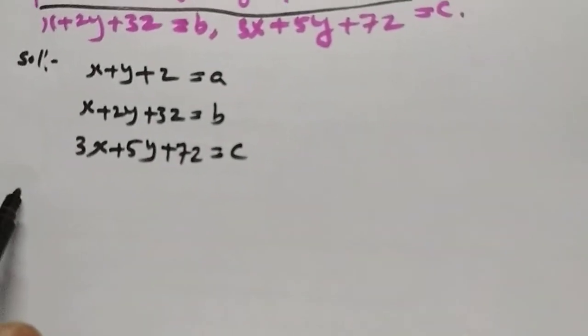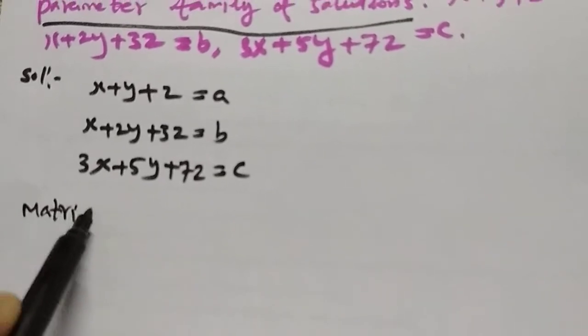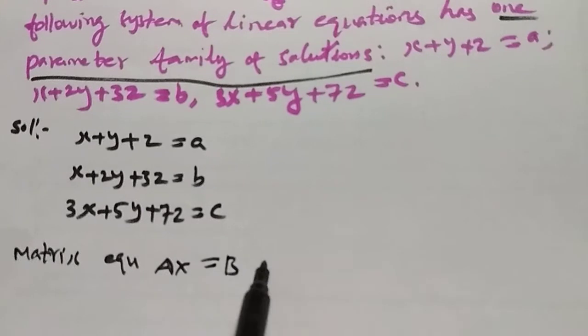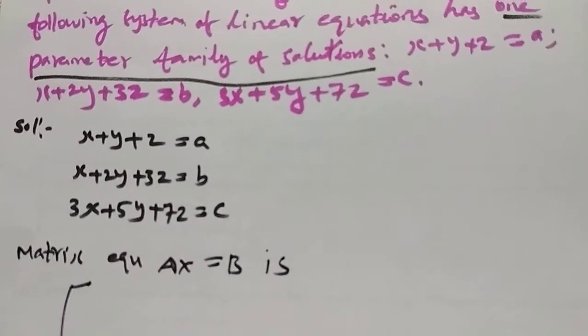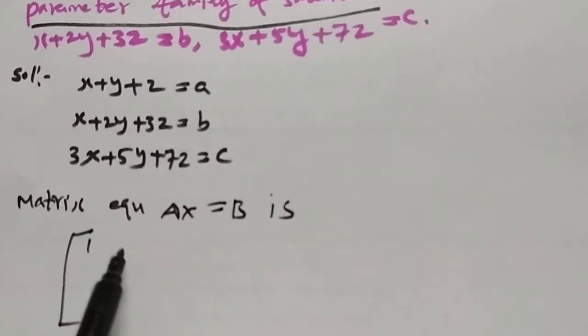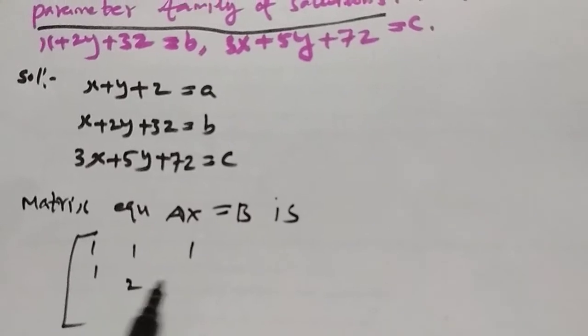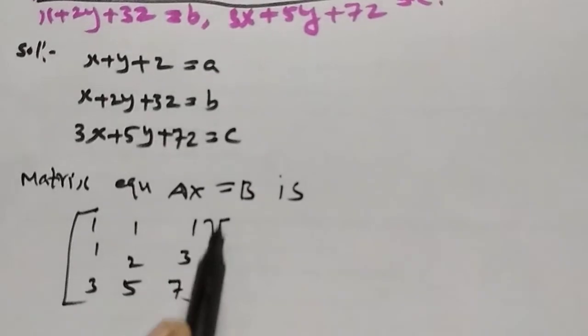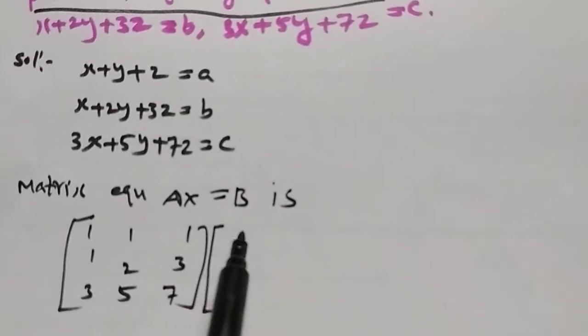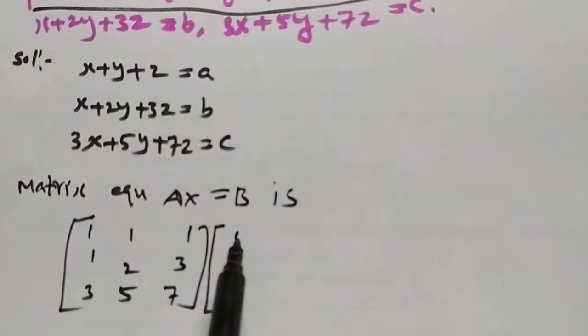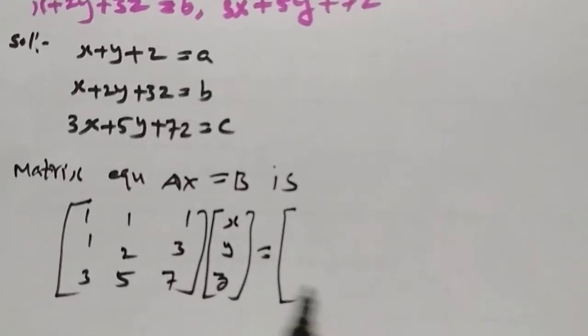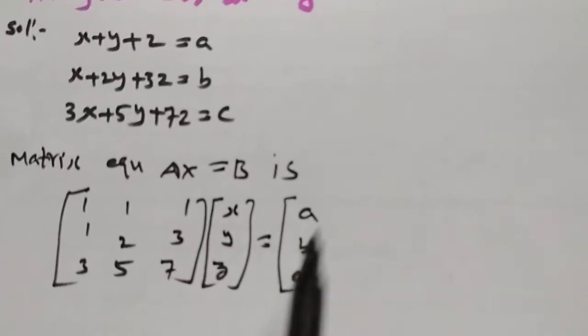Now writing the matrix equation AX equals B. Matrix A is 1, 1, 1; 1, 2, 3; 3, 5, 7. X is the variable matrix with x, y, z. B equals the constant matrix a, b, c.